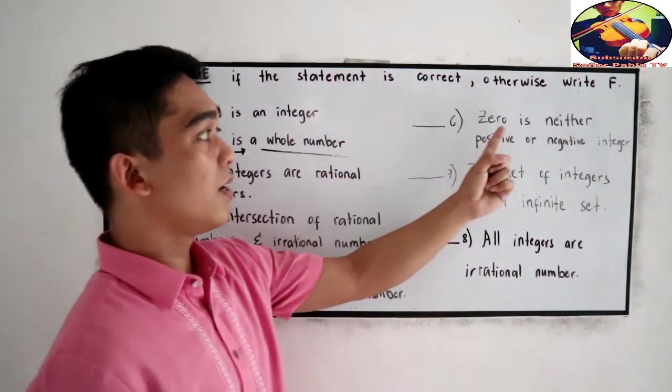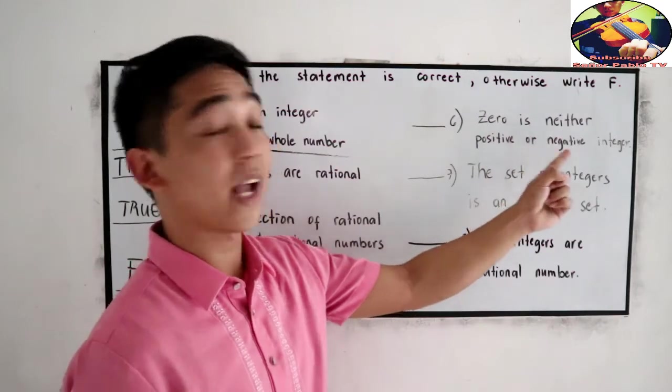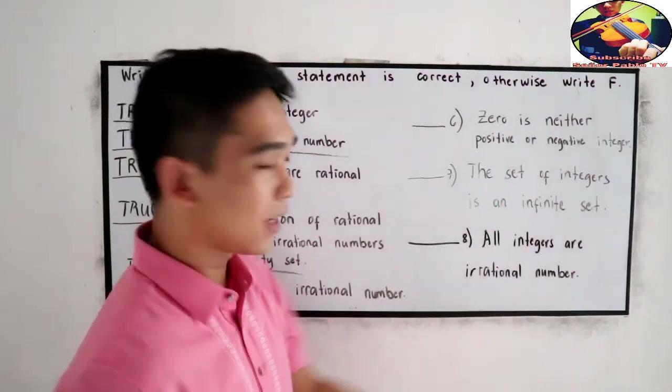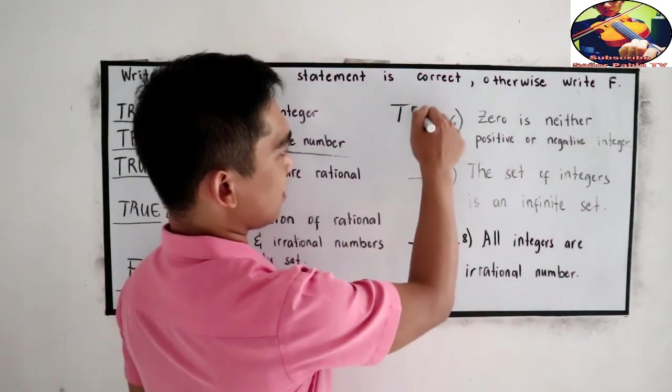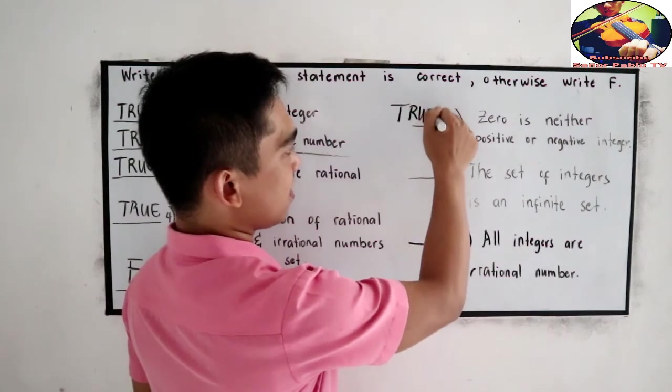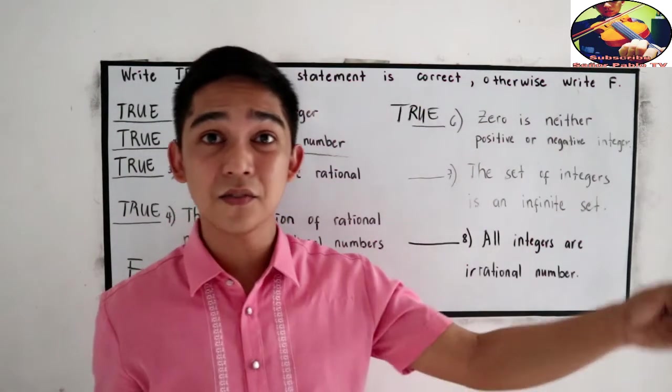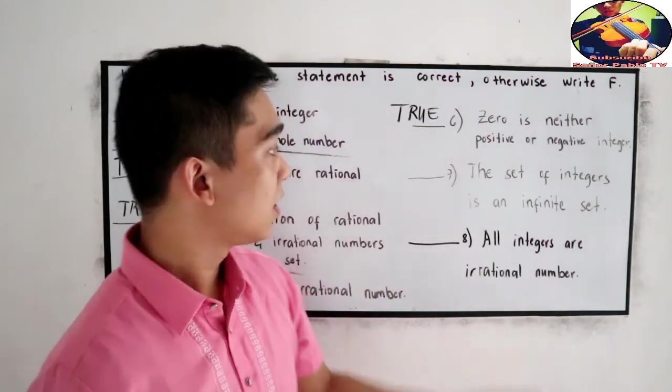Number 6, zero is neither positive or negative integer. Yes, zero is not positive nor negative.